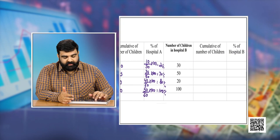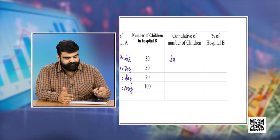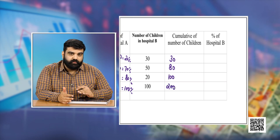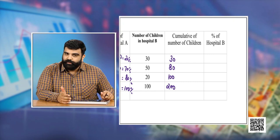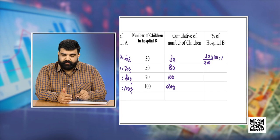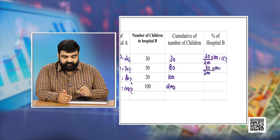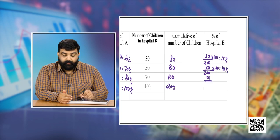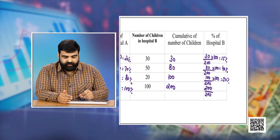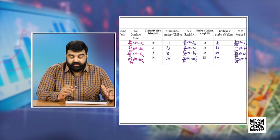Now for Hospital B: cumulating the frequencies gives 30, 80, 100, and 200 — so the total is 200. The percentages are: 30/200×100 = 15%, 80/200×100 = 40%, 100/200×100 = 50%, and 200/200×100 = 100%. We now have all the values needed to draw the Lorentz curve.